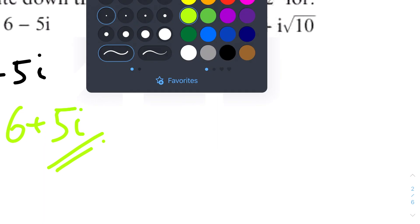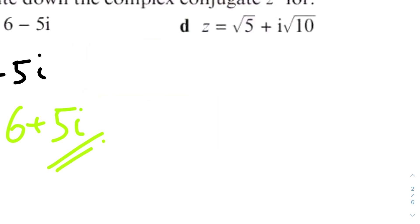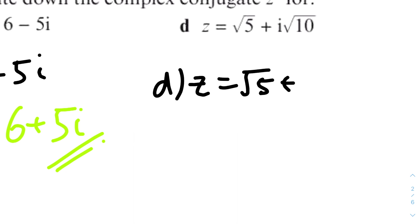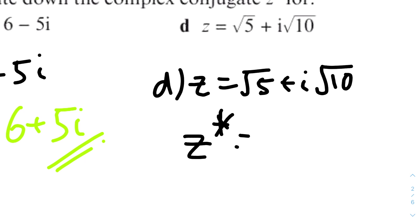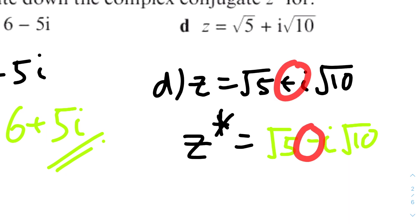And for 1D, Z equals root 5 plus i root 10. It looks complicated at first but don't let those surds throw you off, because it's the same for the conjugate — you just flip the sign before the imaginary unit. So therefore it will be root 5 minus i root 10.